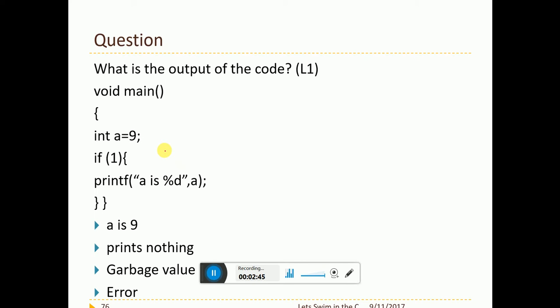And here, please see this. I have a equal to 9. If of 1. What do you mean by if of 1? If of 1 is always true which means that this line will be executed always. If of 1 is nothing but the line is always true. The condition is always met. So the output will be a. A is 9 will be printed.